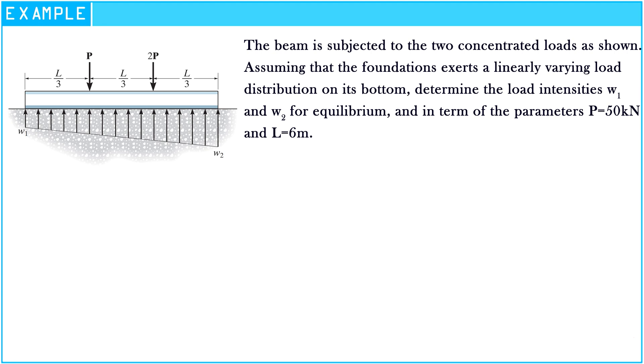The beam is subjected to two concentrated loads as shown, assuming that the foundation exerts a linearly varying load distribution on its bottom. Determine the load intensities W1 and W2 for equilibrium, and in terms of parameters P equals 50 kN and length of beam equal to 6 meters.